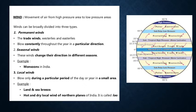Winds can be broadly divided into three types: permanent winds, seasonal winds, and local winds. Permanent winds — the trade winds, westerlies, and easterlies — blow constantly throughout the year in a particular direction. That is why they are called permanent winds.